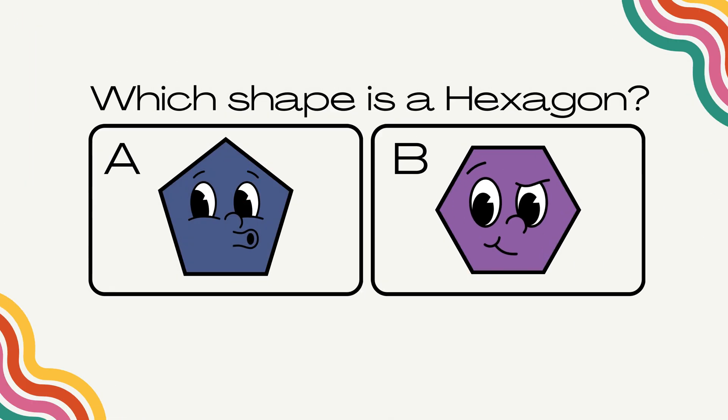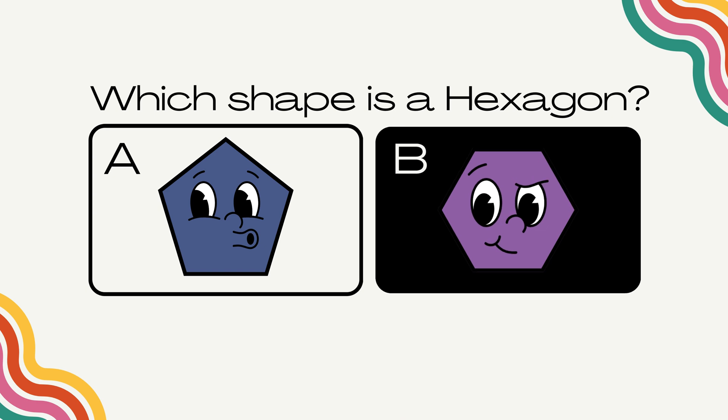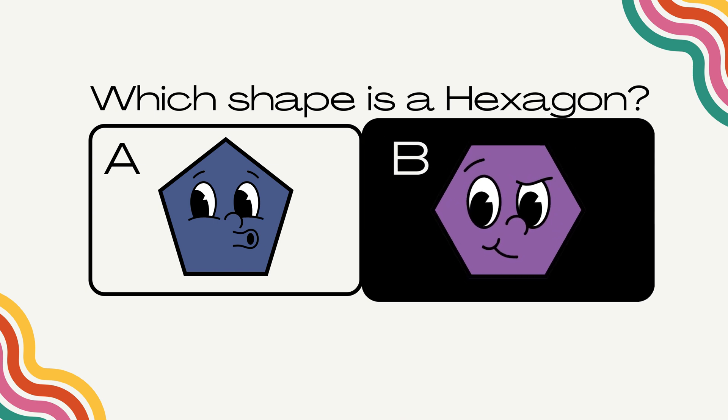Which shape is a hexagon? The correct answer is B.